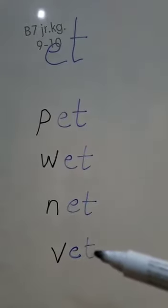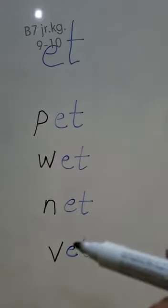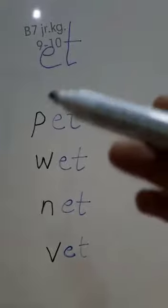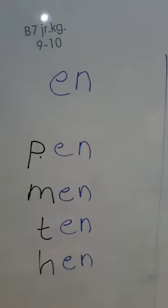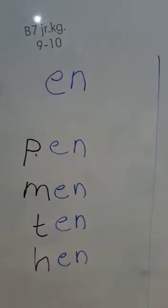Et words. Pet, wet, net, vet. These are the words of et and they are rhyming words of each other. So these are the et words. These are the en words. Understand?